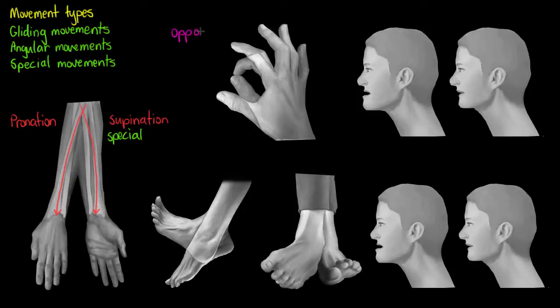Our next movement type, illustrated here with the hand, is called opposition. I've shown it here with the thumb and index finger touching together, but when we touch any of our fingers together with our thumb we call that opposition. It is allowed by the unique saddle-type joint found between our first metacarpal and the trapezium, which is our most lateral carpal bone. This is also a special movement type.